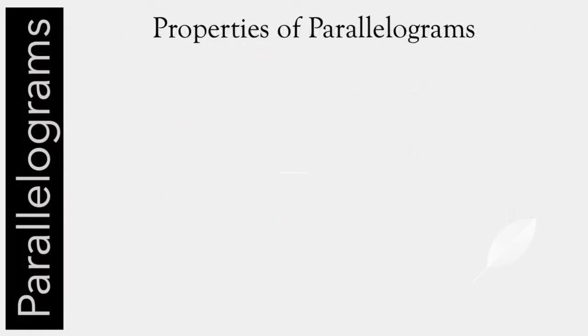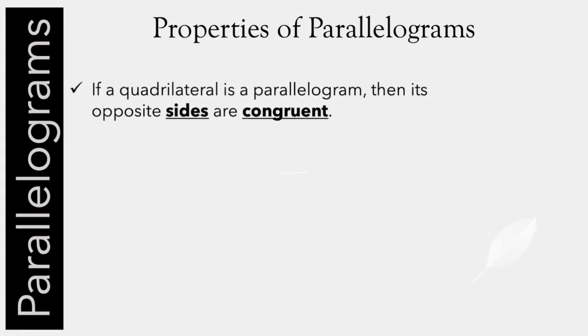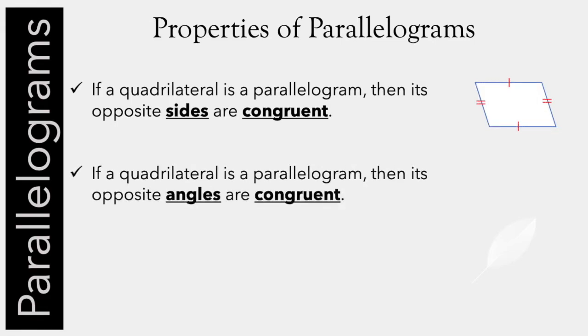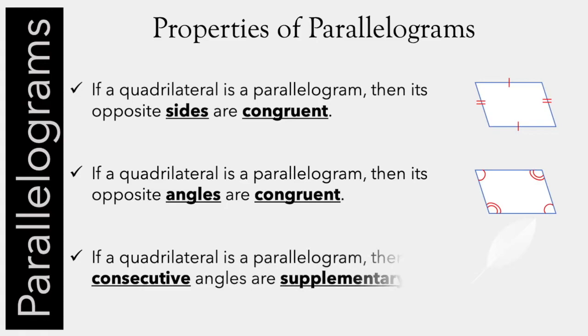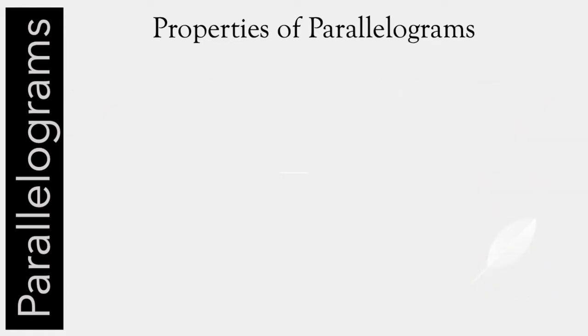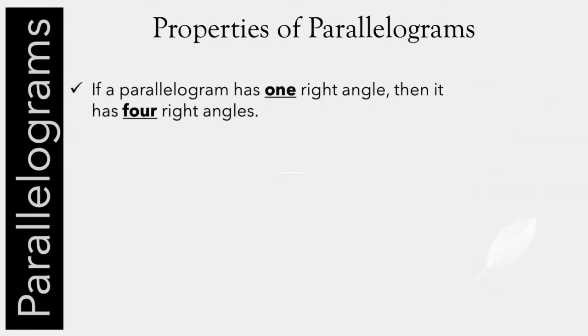Now parallelograms have a lot of cool properties. If a quadrilateral is a parallelogram, then its opposite sides are congruent. If a quadrilateral is a parallelogram, then its opposite angles are also congruent. If a quadrilateral is a parallelogram, then its consecutive angles are supplementary. So that would mean that x plus y equals 180. If the parallelogram has one right angle, then it has four right angles.